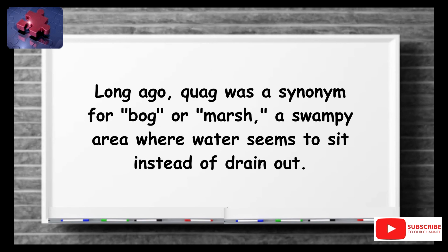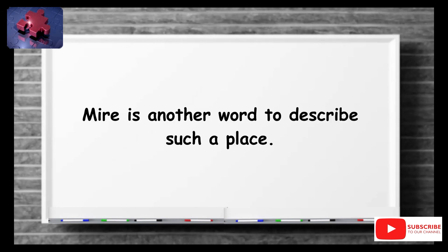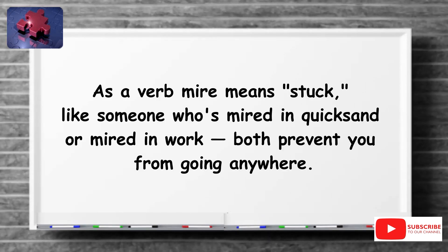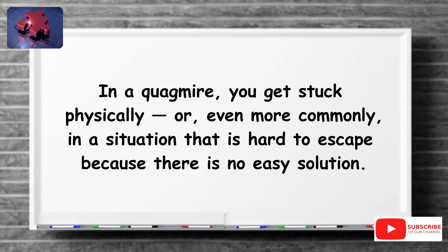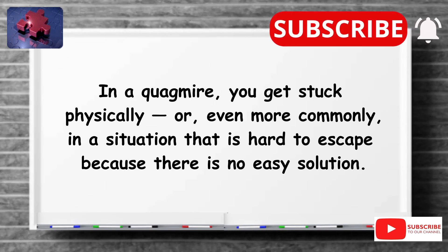Long ago, quag was a synonym for bog or marsh — a swampy area where water seems to sit instead of drain out. Mire is another word to describe such a place. As a verb, mire means stuck, like someone who's mired in quicksand or mired in work — both prevent you from going anywhere. In a quagmire, you get stuck physically or, even more commonly, in a situation that is hard to escape because there is no easy solution.